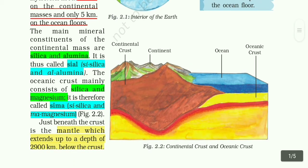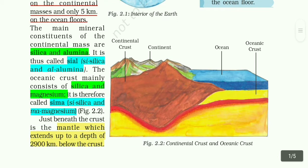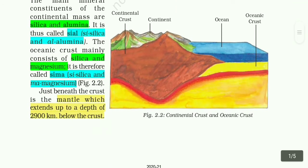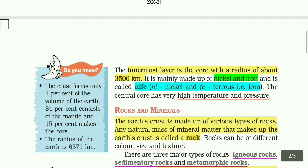The mantle extends up to a depth of 2900 km below the crust. See this picture. The core is made up of nickel and iron. The central core has very high temperature and pressure.